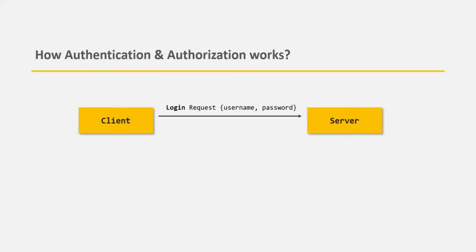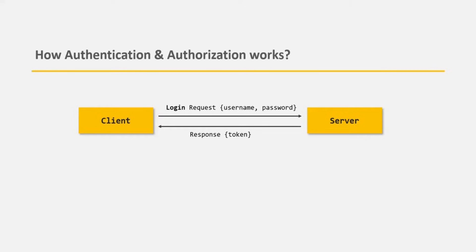Once the server has validated the authentication data, and if the login credentials are valid, the server will send a token in the response to the client. This token is called a JSON Web Token. A JSON Web Token is an encoded string and it is unique for a given client. This JSON Web Token is different every time the user logs in, and it is this JSON Web Token which is used for authorizing a user and gives access to the protected resource. It is generated on the server using some algorithm and a secret string which only the server knows, and only the server can validate any incoming token and decide if that token is valid or not.